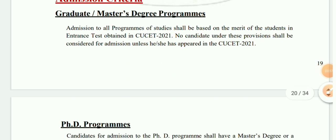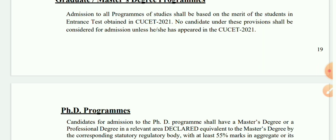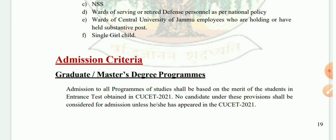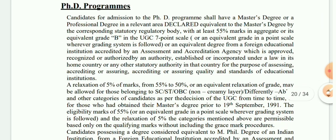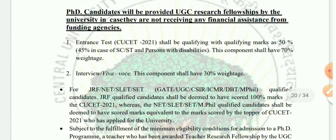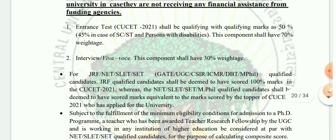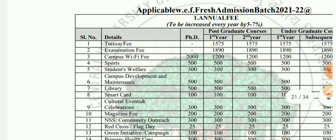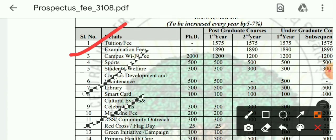No candidate under these provisions shall be considered for admission unless he or she has appeared in CUCT. If you want to take a graduate or master's program from Central University of Jammu, you must appear in CUCT. For PhD, the university provides UGC research fellowship. Candidates not receiving financial assistance from funding agencies must qualify with qualifying marks in CUCT. So for PhD also, you must qualify CUCT.